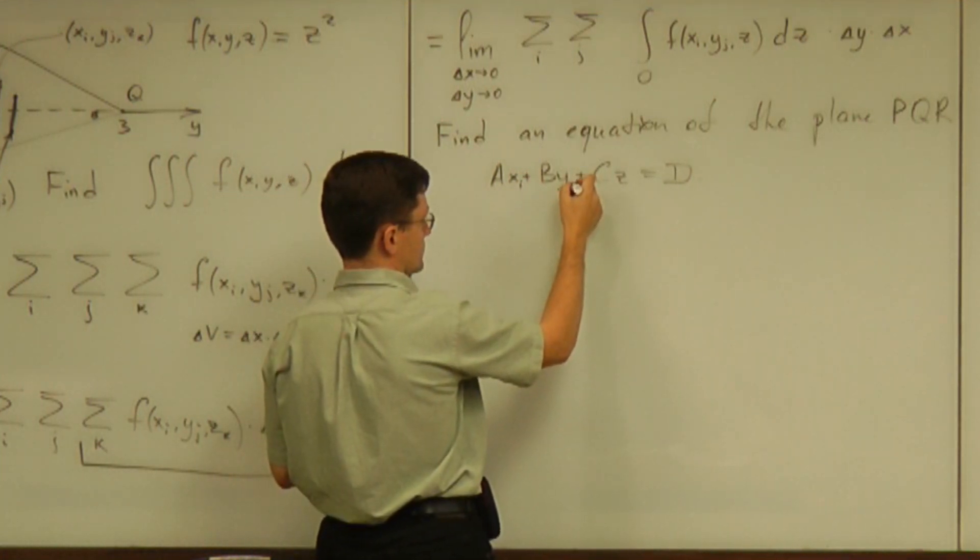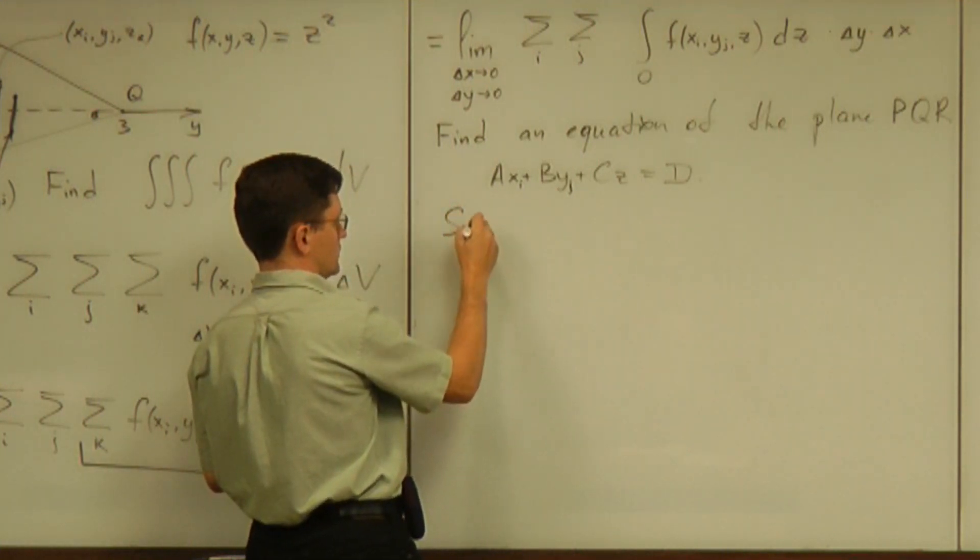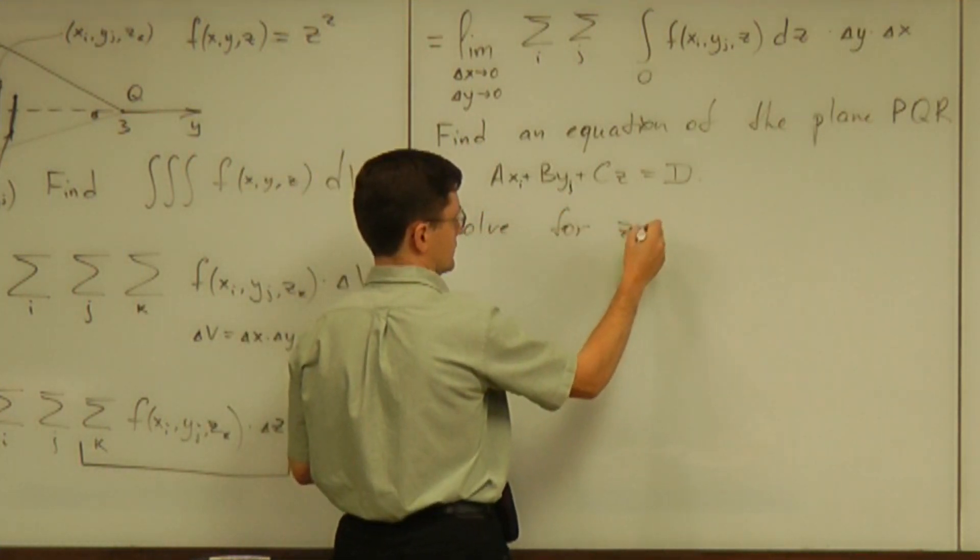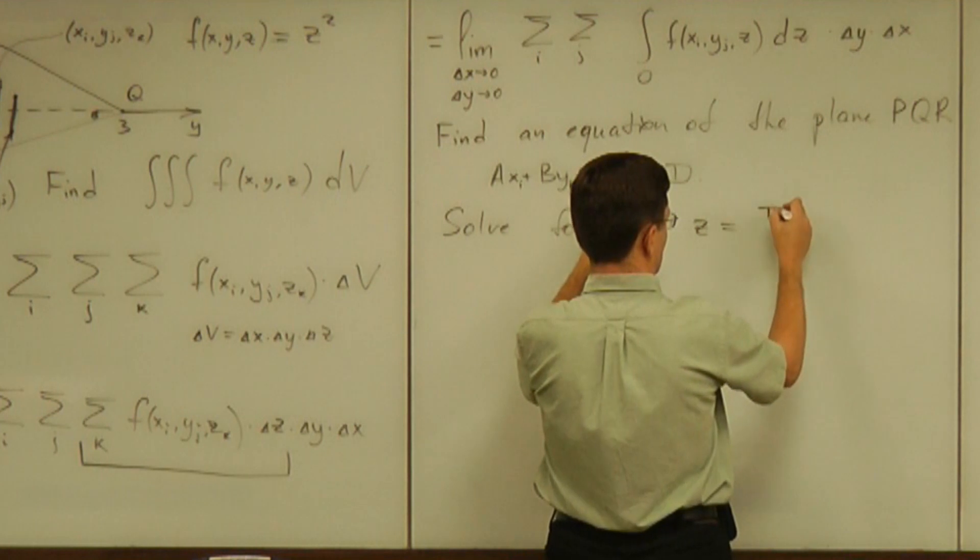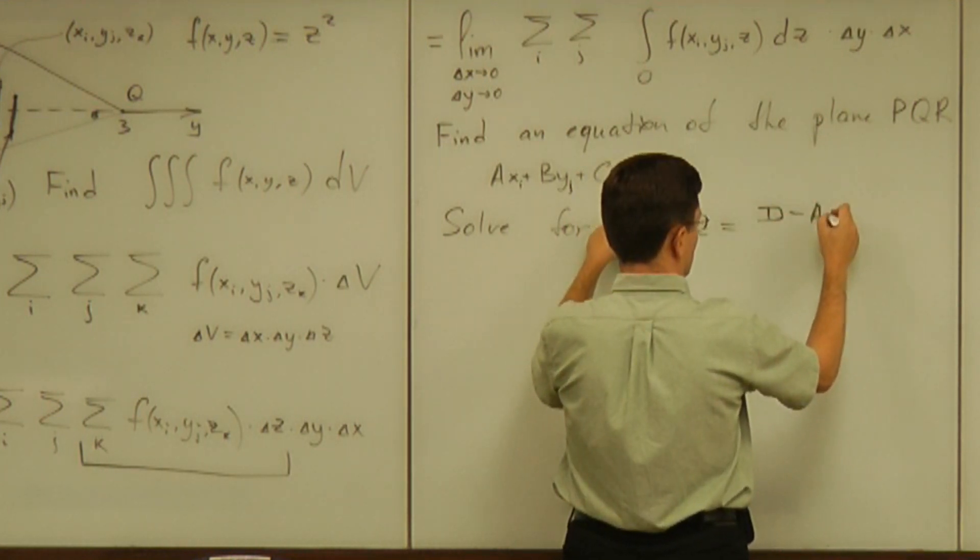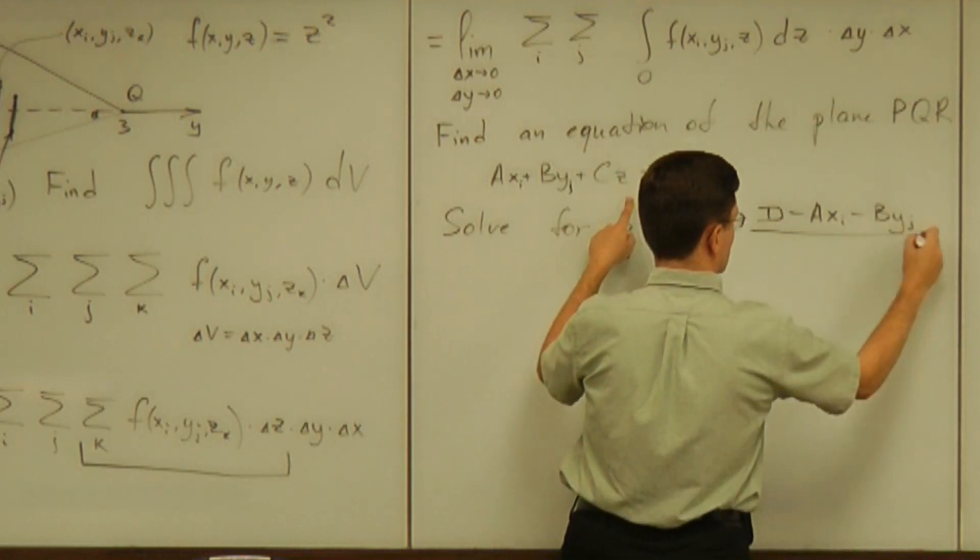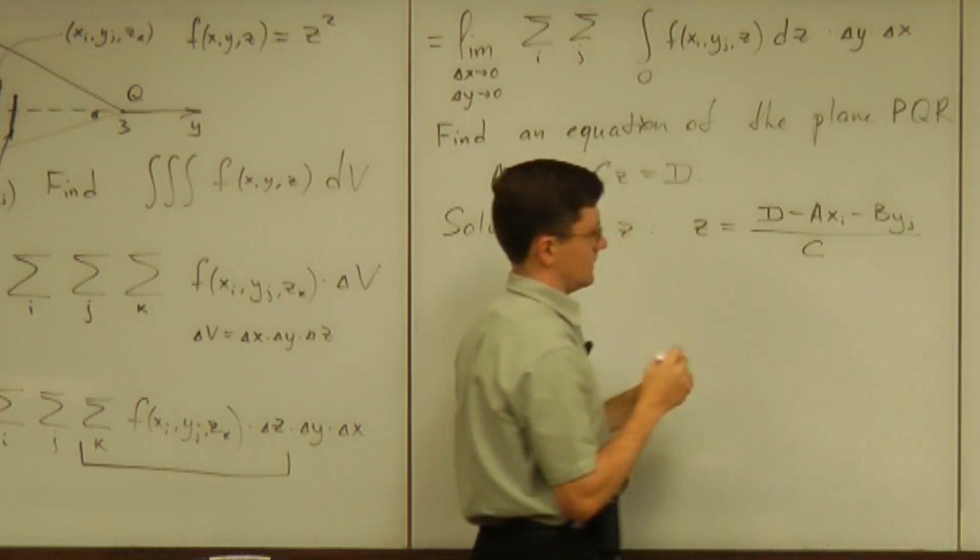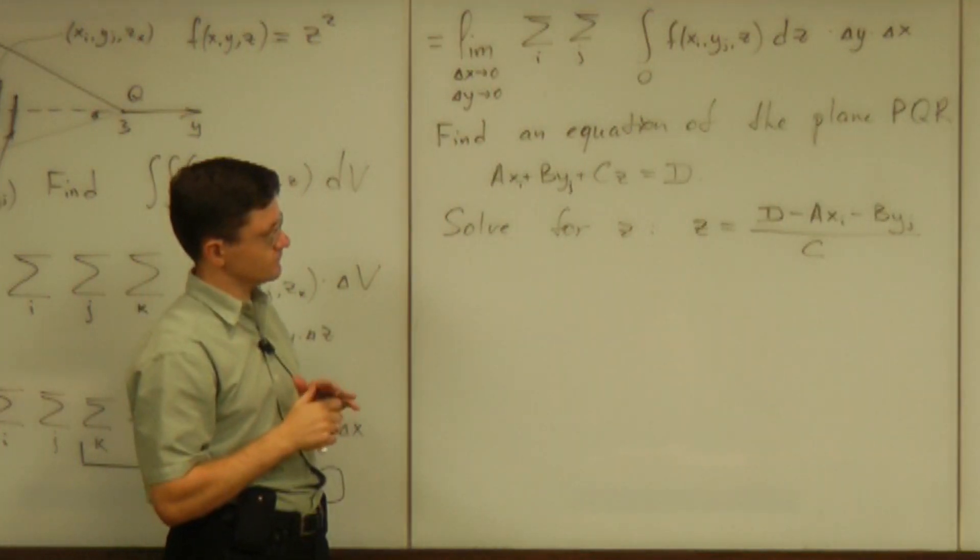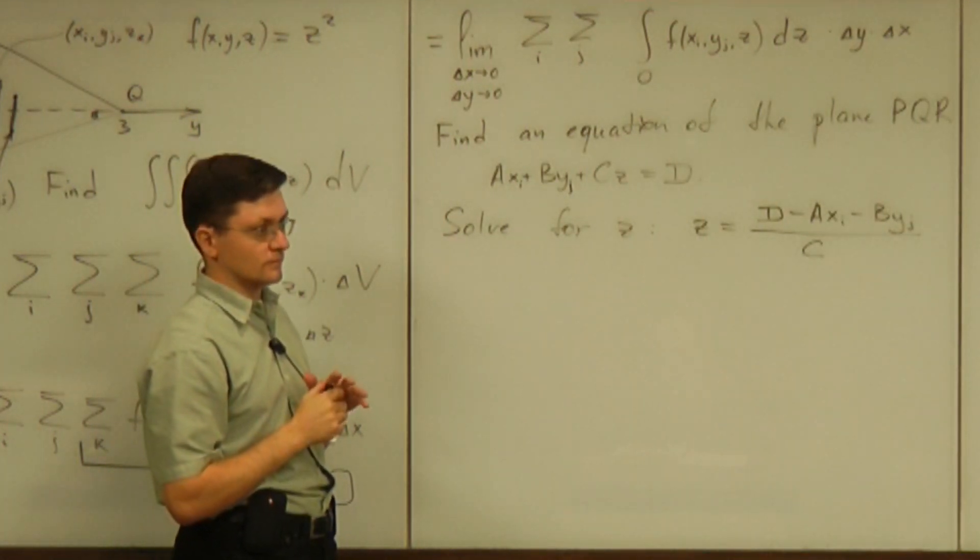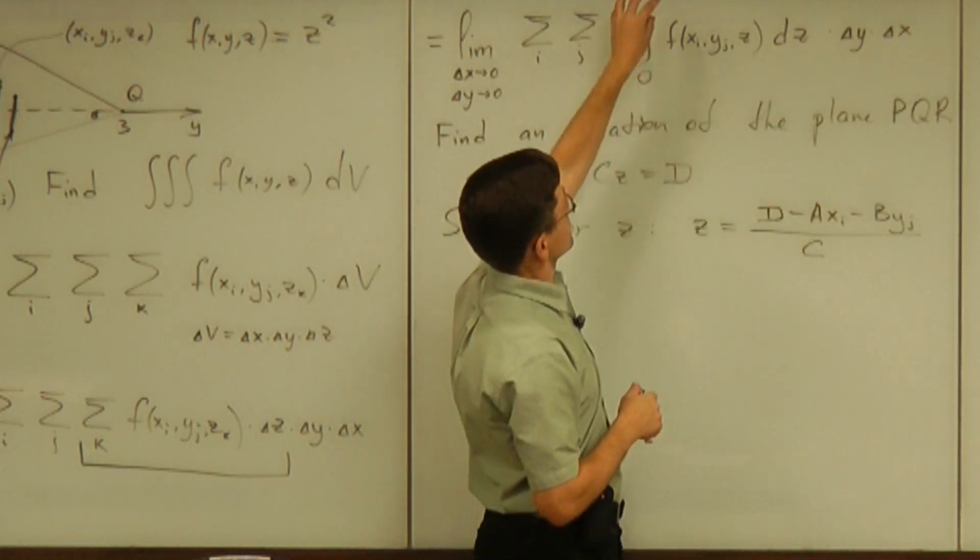Because what you will have to do is you will have to figure out the z value out of this equation. So you will have to solve for z because the x is going to be, actually that's xi, y is going to be yj. And z will be something you will have to solve for. So solve for z in this equation. Z equals d minus axi minus byj divided by c. And then this is a function of xi and yj. Okay, you can take this, put it as a limit.